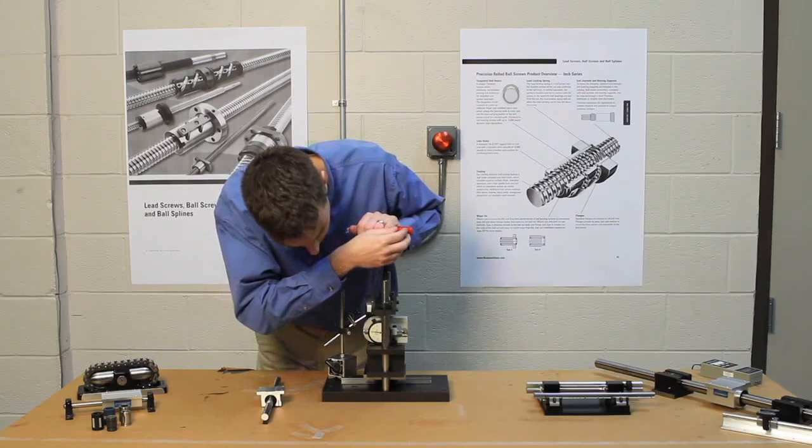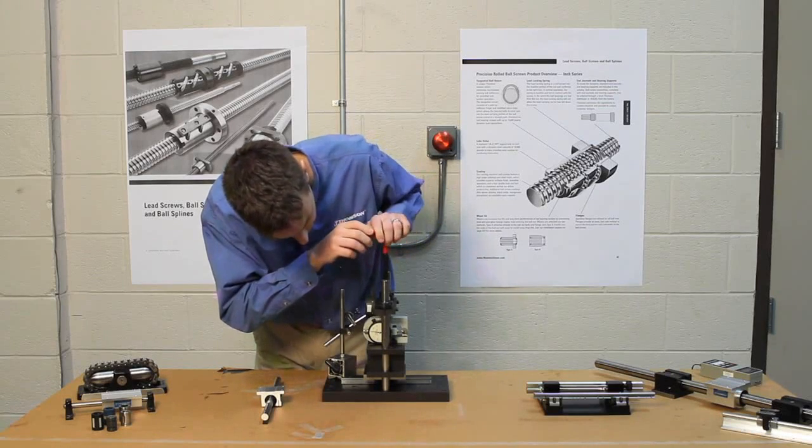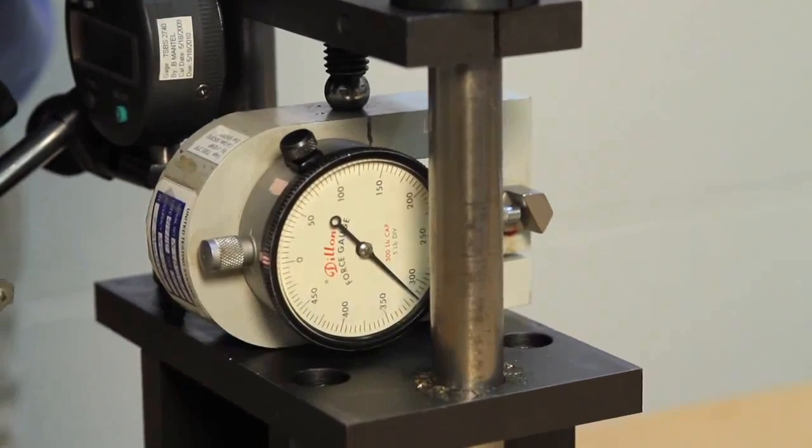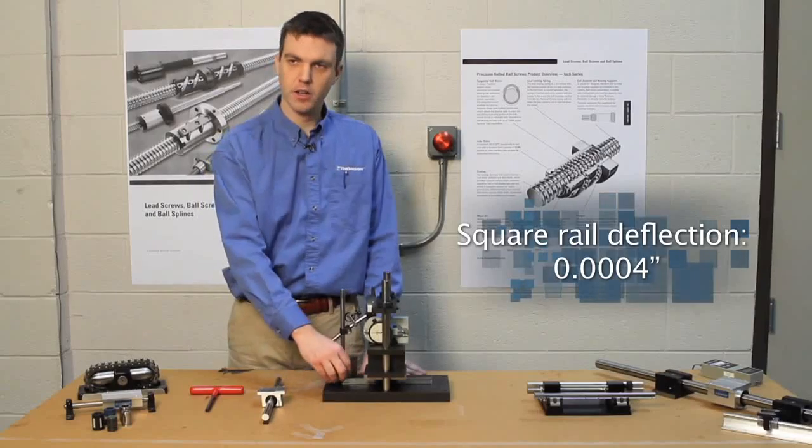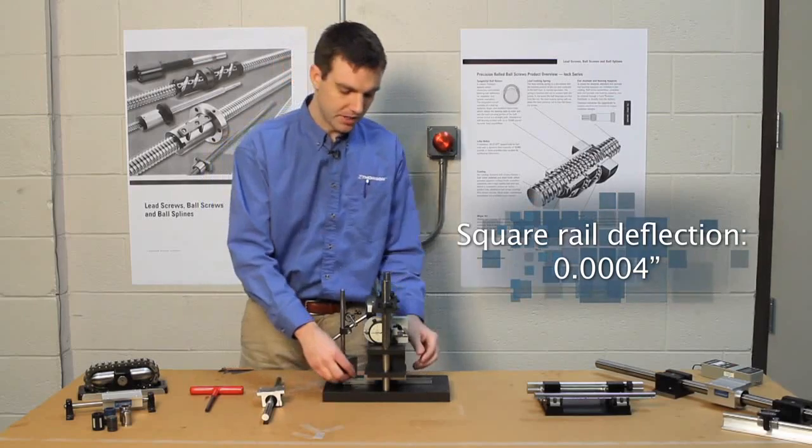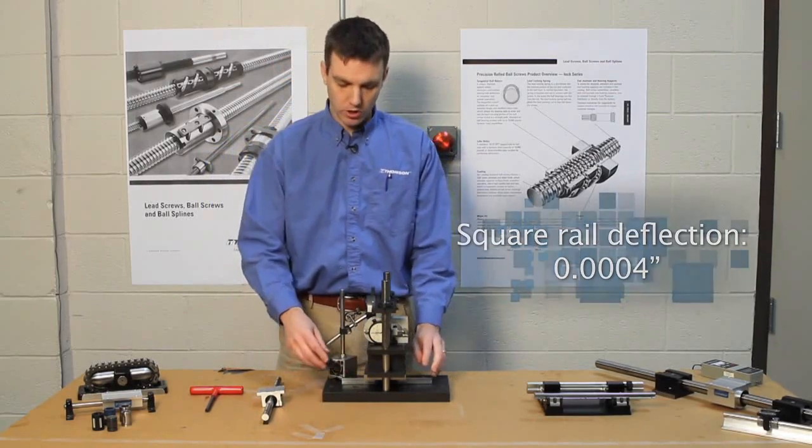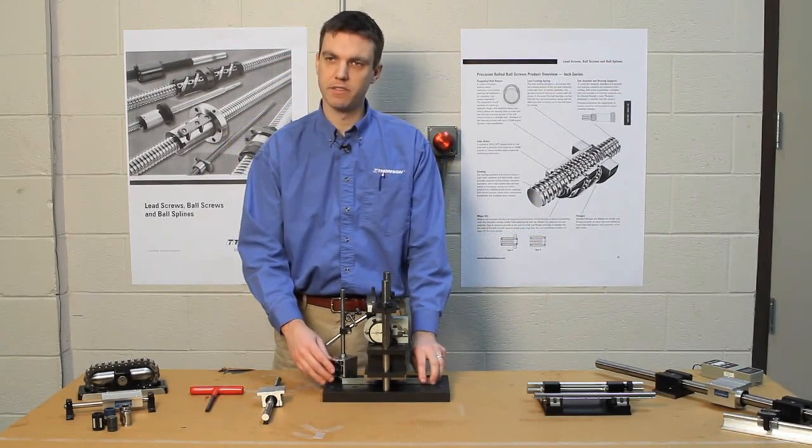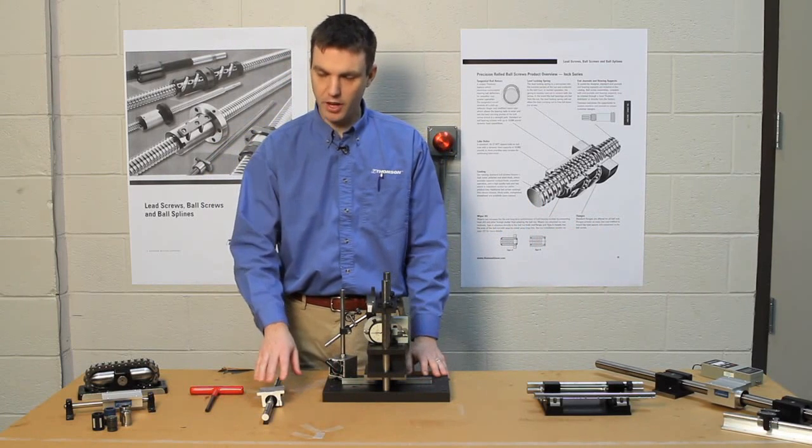Apply a 320 pound load to this rail. What this shows is that the deflection characteristics are much better in the square rail versus the round rail. So that means in your system, you can apply more load to the square rail and expect less deflection of the total system than you can with a round rail.